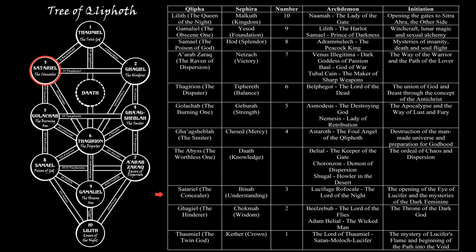Satariel, the Concealer, is the first realm in the final triad of the Dark Tree. On the Tree of Life this corresponds to Binah, Understanding. Its demon god is Lucifer Trifocal, the Lord of the Night. The initiation of this realm is the opening of the Eye of Lucifer and exploration of the mysteries of the Dark Feminine.